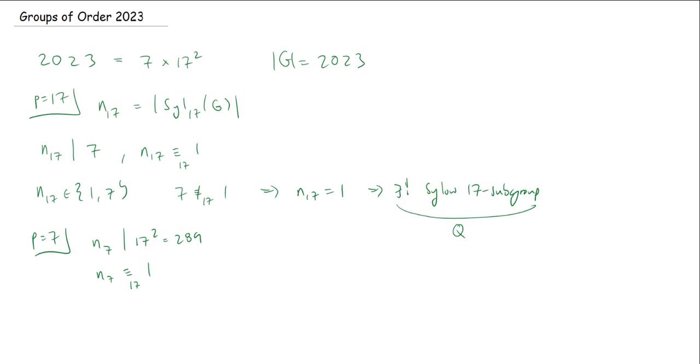But if N_7 divides 289, well, there's not so many choices then. So N_7, it could be 1. It could be 17, or it could be 289. Those are the only divisors of 289. And let's see, which of these is congruent to 1 mod 7?